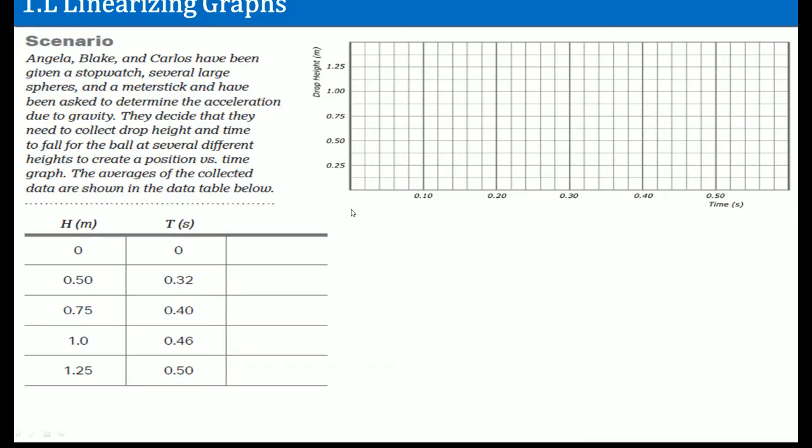Alright, so what they're going to do is just plot them. Zero, zero. The next one, 0.50 and 0.32. Because again, time is on the x-axis and the height is the drop height. The y is the drop height. And the next one is 0.40, comma, 0.75. Next one, 0.46, comma, 1.0. And the next one, 0.5, comma, 1.25.